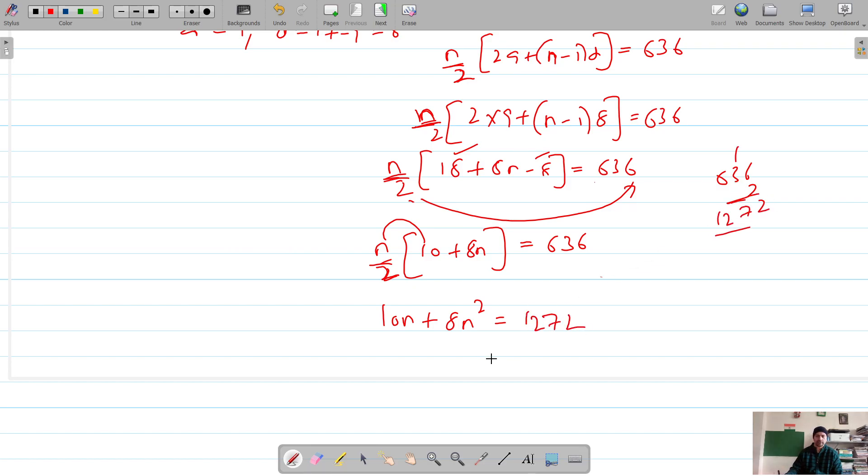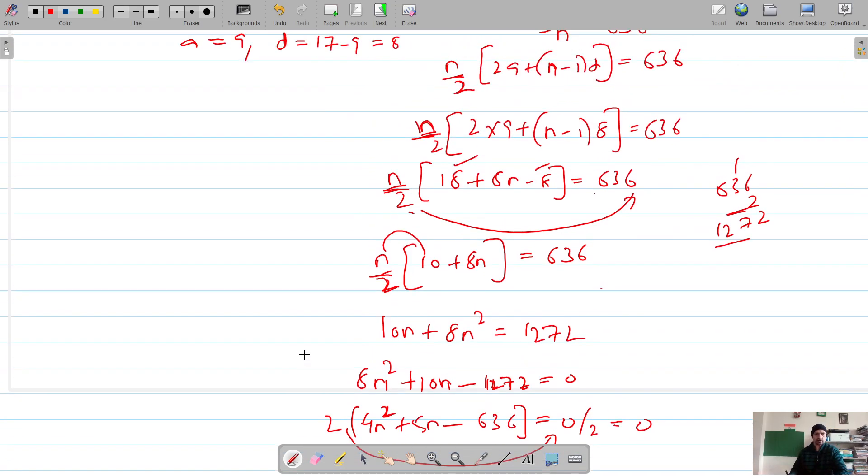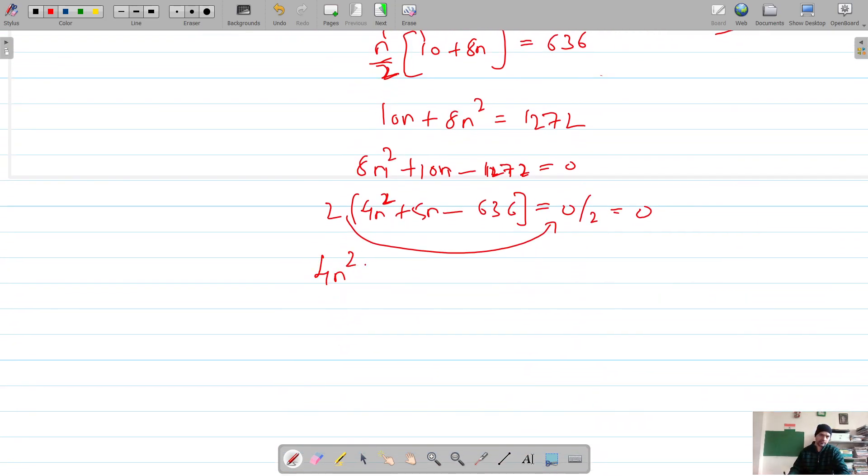And now our equation is 8n square plus 10n minus 1272 equals 0. Let's try to see if we can get something common here. So the common is 2, it's 4n square plus 5n minus 636 equals 0. Shifting 2 to this side is 0 by 2 equals 0. So our quadratic equation is 4n square plus 5n minus 636.